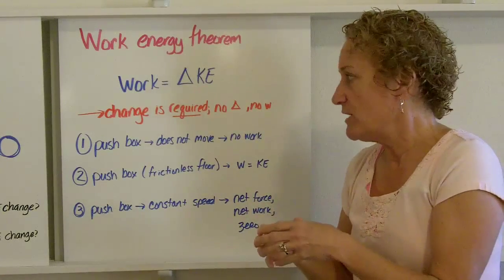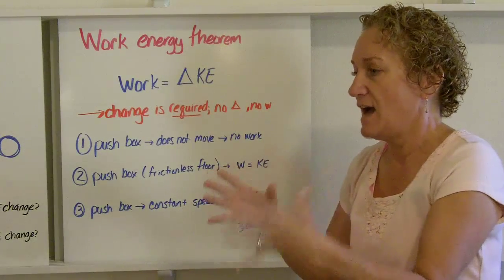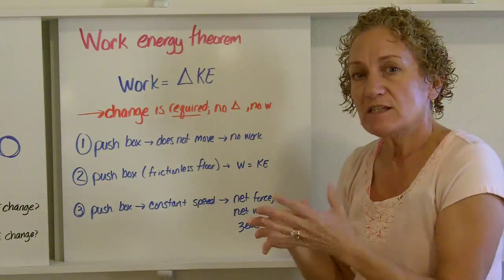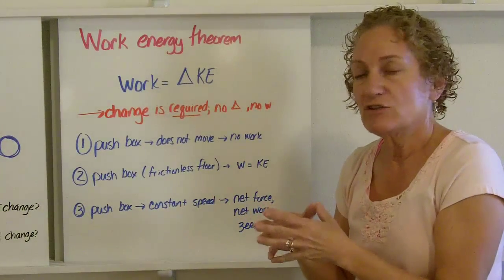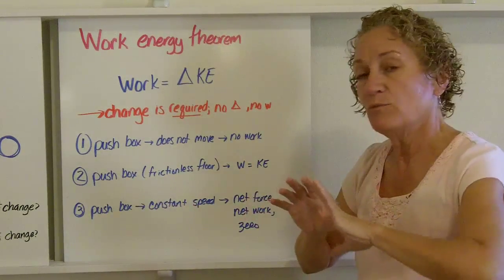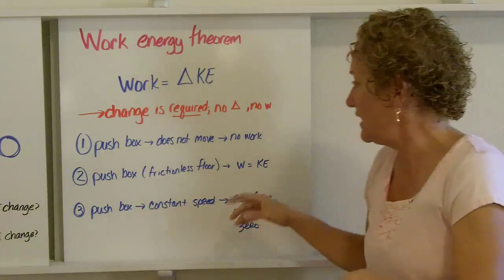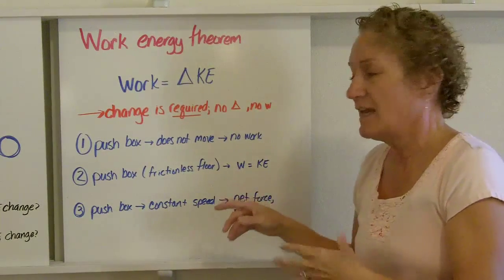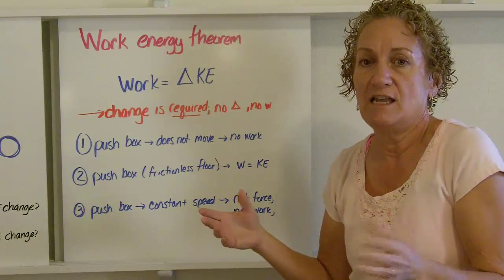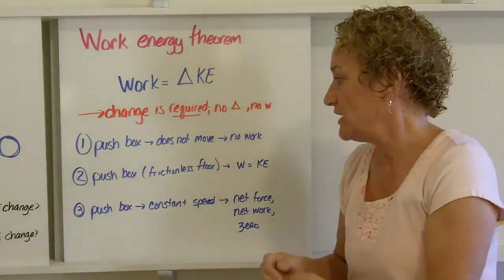So let me give you three examples. You have this big old box on the floor and you're trying to push it and it doesn't move. Well, if it doesn't move, you've done no work. There's no change in kinetic energy. If you push the box on a frictionless floor, really slippery floor, and you just push it, the work is equal to the kinetic energy, because initially the kinetic energy was zero, right? It had no velocity. So work is equal to kinetic energy.